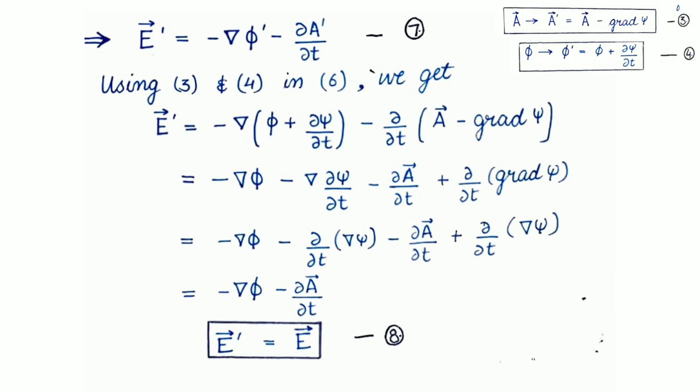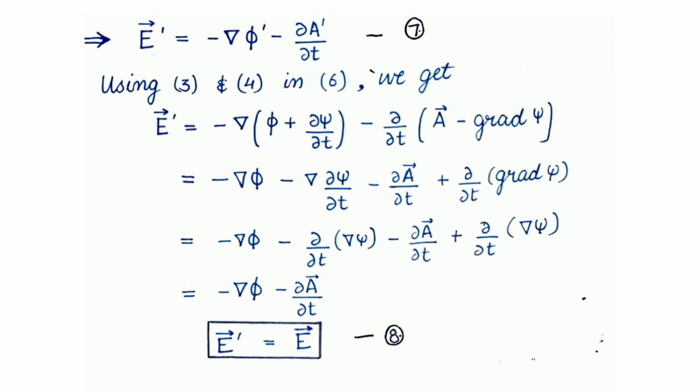You can see here that E dash has the coordinates phi dash and A dash while E has the coordinates phi and A. No matter whether the coordinates are different, but the electric field will remain same under this transformation. So, this was the gauge transformation.